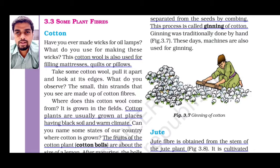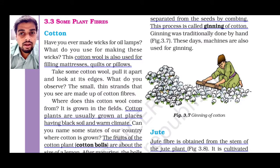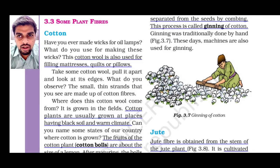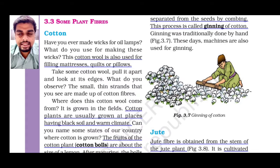I want you to do a simple task: look around you and make a list of things made of cotton. In your book, it says cotton is used to make mattresses — that is a gadda — then quilts, which are nothing but blankets.